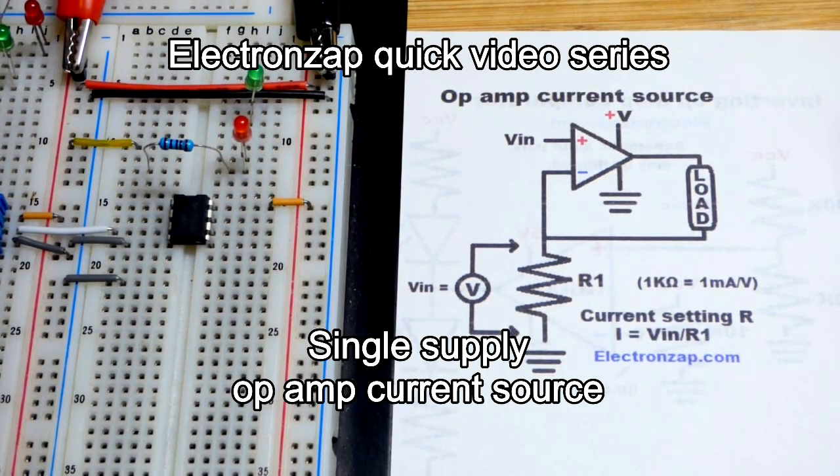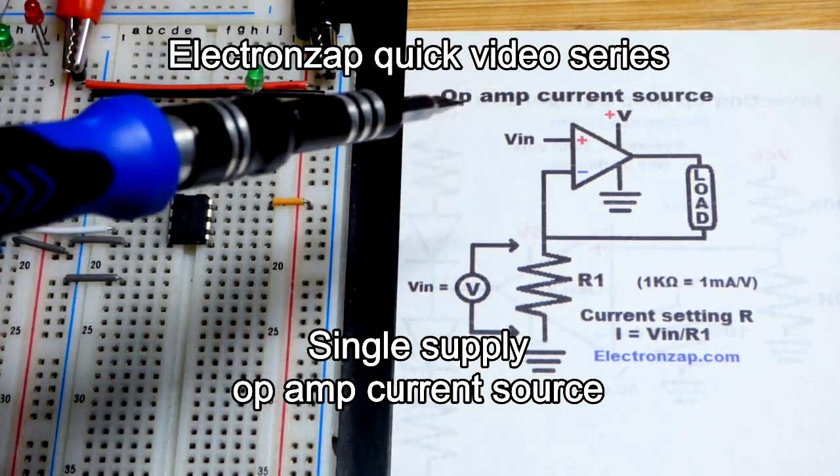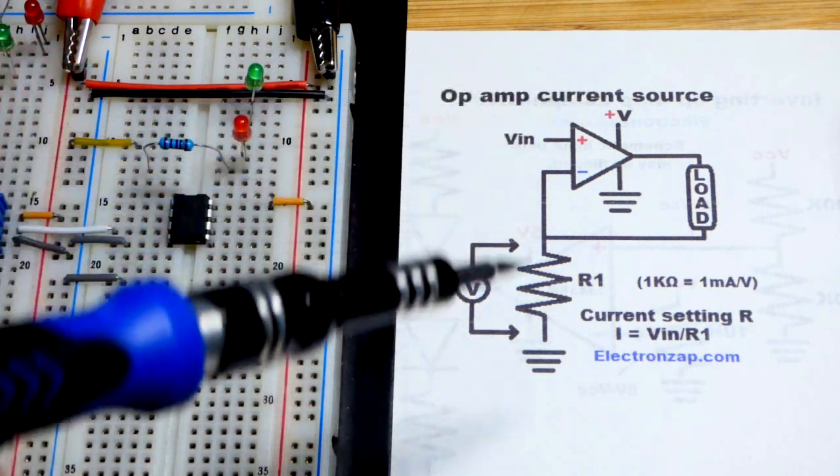So now in this video, we're going to make another really easy circuit with the op amp. We're going to make a current source.